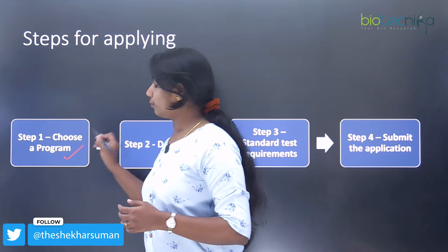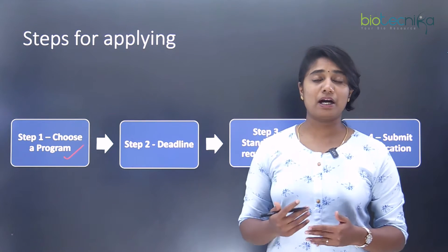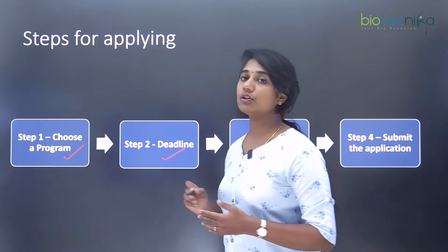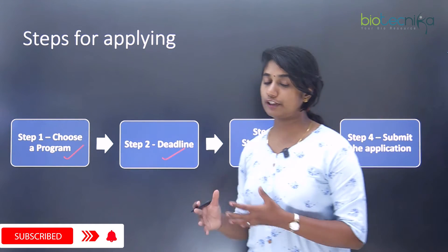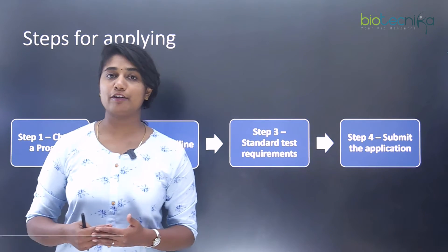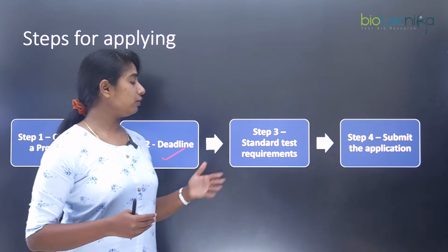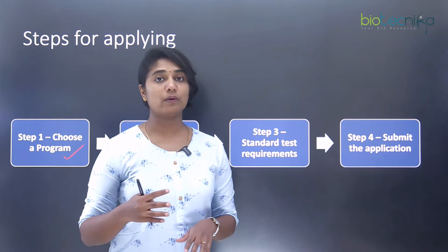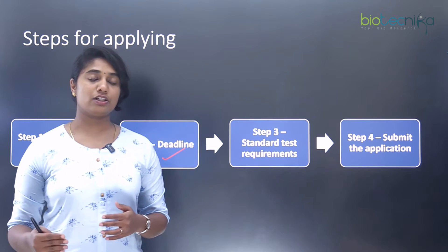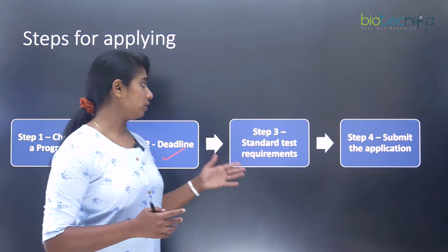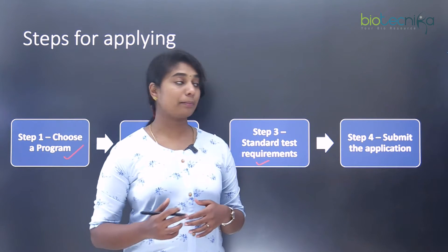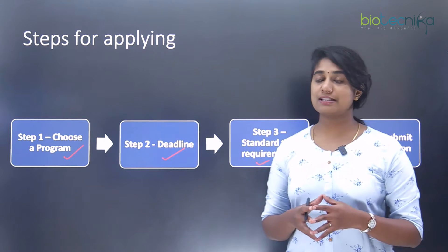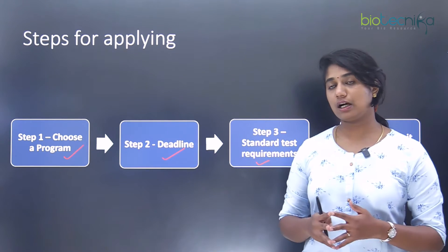The first step is you choose a program — there are various departments in Harvard, so you first choose which particular department you want to do your PhD in. Second, make a note of the deadline, because for different departments and labs the deadline for applying is different. Third, check the requirements for standard tests: is GRE required? Is TOEFL or IELTS required, and what is the minimum score needed? Lastly, complete your online application and submit it well before time.